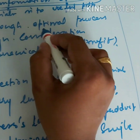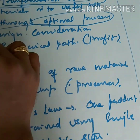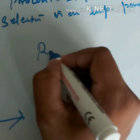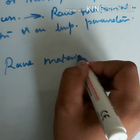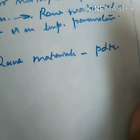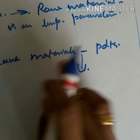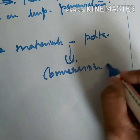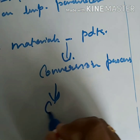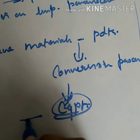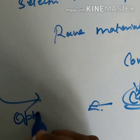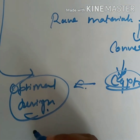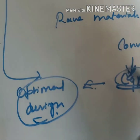The next point is optimal process design. In all process industries, the raw materials are converted into products through conversion processes, and these conversion processes are connected to some equipment. The optimal design of this equipment is an important parameter — that is the second point.